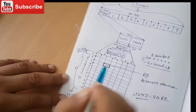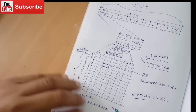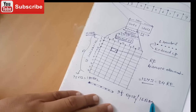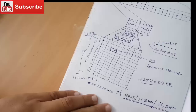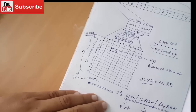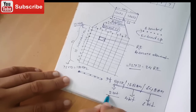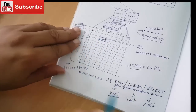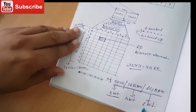Each resource element carries bits depending on the modulation scheme. If QPSK is used, 2 bits per RE. If 16-QAM is used, 4 bits per RE. If 64-QAM is used, 6 bits per RE.